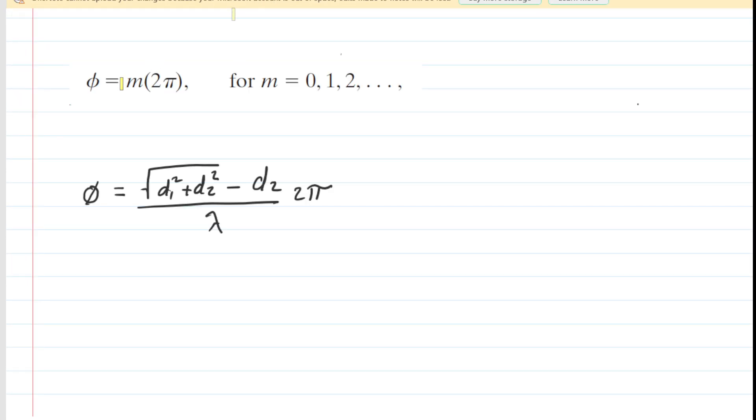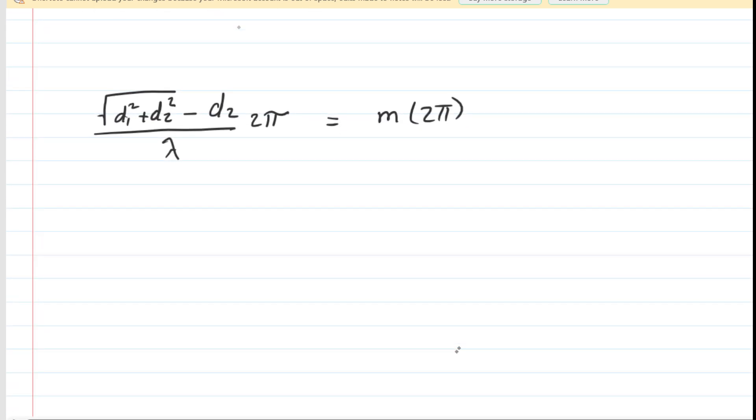So for constructive interference, we have the phase difference equaling this term right here, where m is the same set of integers as it was for destructive. And then remember, the phase difference expression that we had developed would still be applicable because we haven't changed any of those distances or the arrangement of the speaker. So we're going to set these two equal to one another.